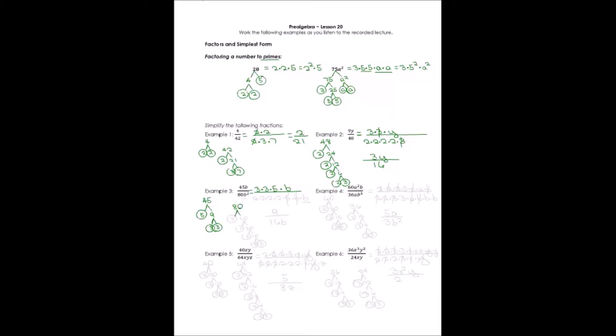Now let's factor 80. It's an even number, so: 2 times 40, 2 is prime; 2 times 20, 2 is prime; 2 times 10, 2 is prime; 2 times 5, both prime. So 80 factors into 2 times 2 times 2 times 2 times 5. And b squared is b times b. Let's cross out anything that matches. There are no 3s or 2s common to both. There's one set of 5s and one set of b's to cancel. What's left in the numerator is 3 times 3, or 9. In the denominator, 2 times 2 times 2 times 2, or 16, and 1b — so 16b. That's our lowest form.